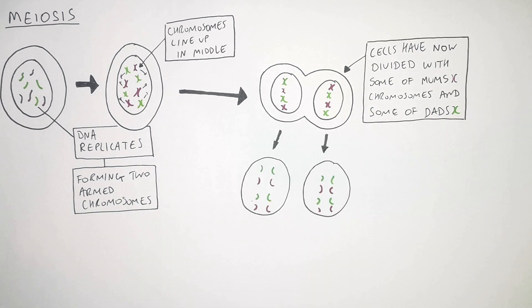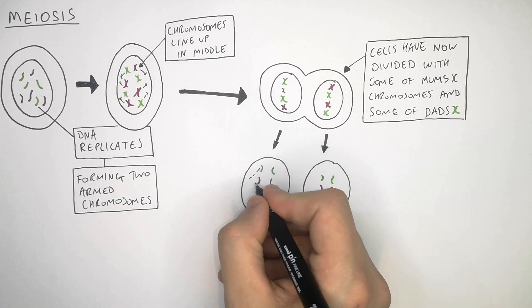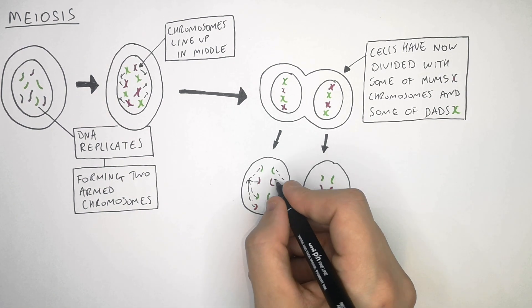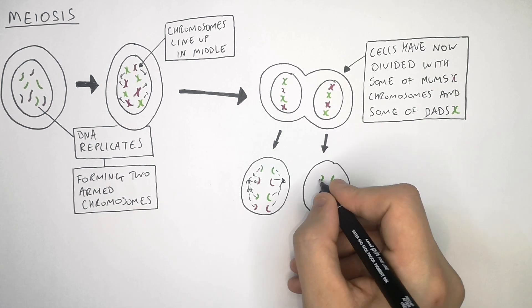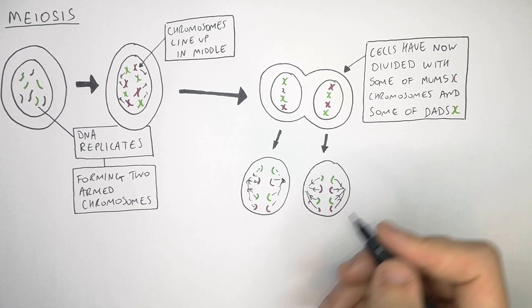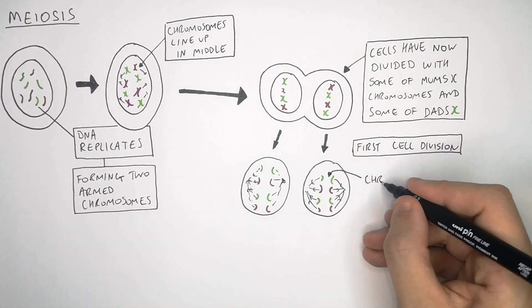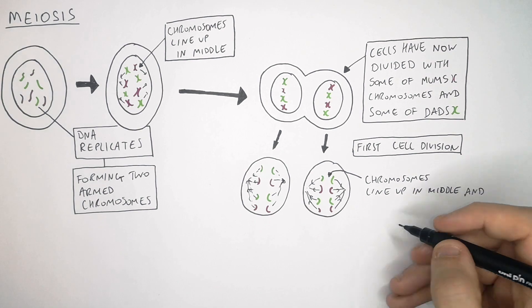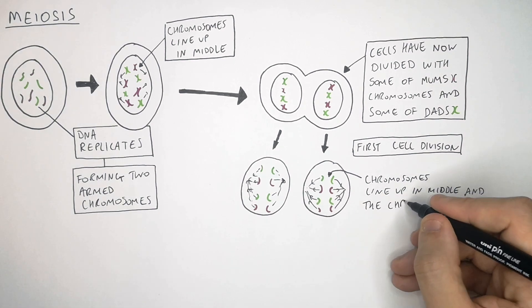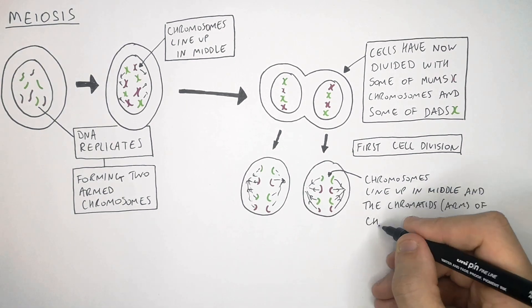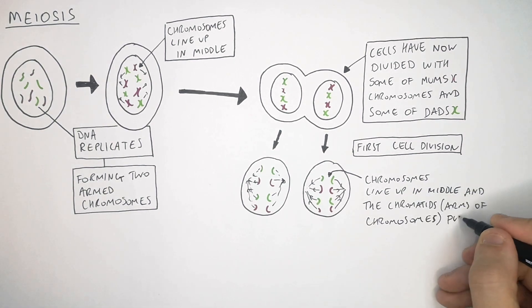These chromosomes are then going to split. The two-armed chromosomes split to form one-armed chromosomes again, and these one-armed chromosomes are then pulled away from the middle to the poles of the cell. So the chromosomes line up in the middle and the chromatids, which are the arms of the chromosomes, are pulled apart.